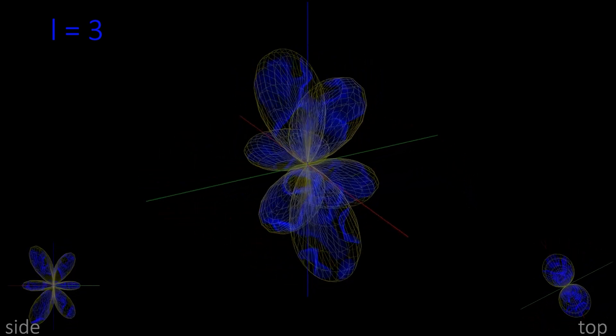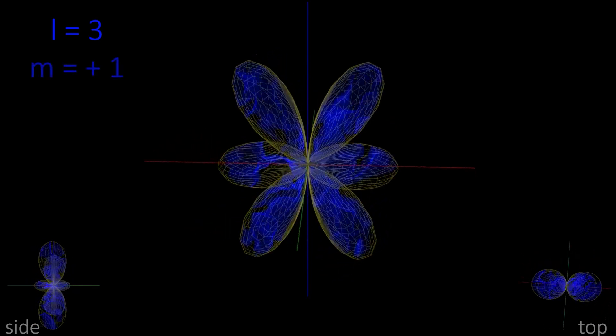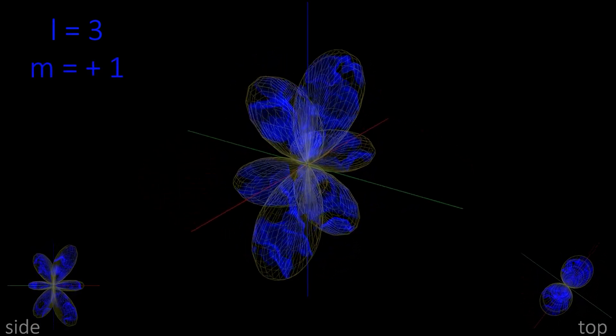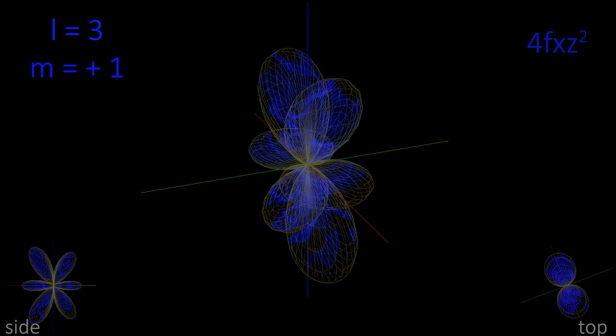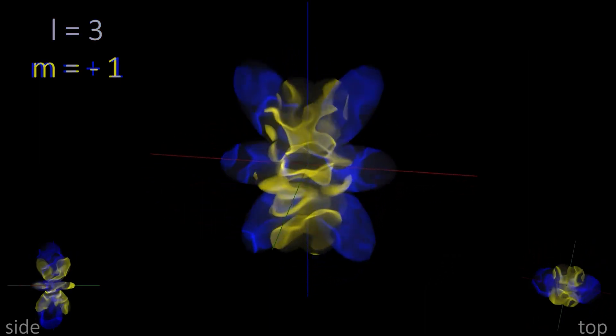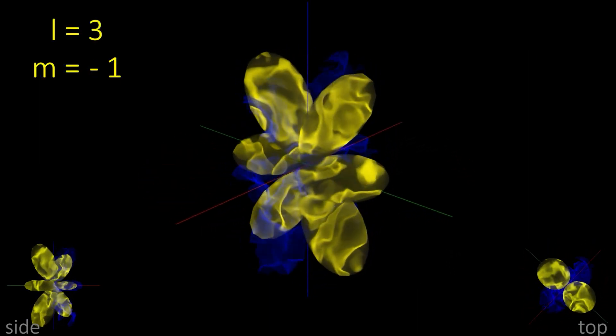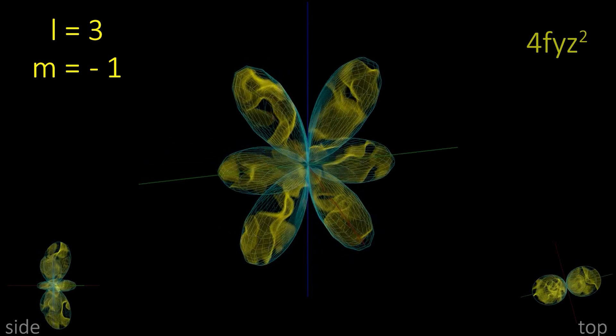M plus 1, we see the lobes in the xz plane. We call this 4fxz squared. M minus 1 is in the yz plane. We call this 4fyz squared.